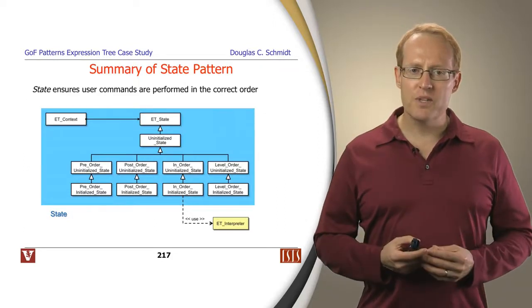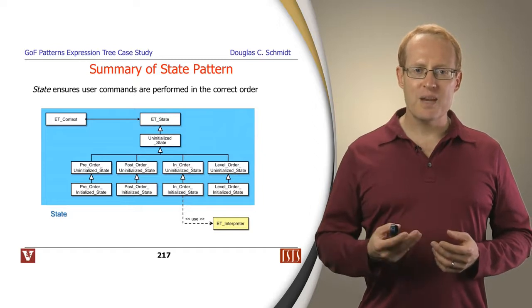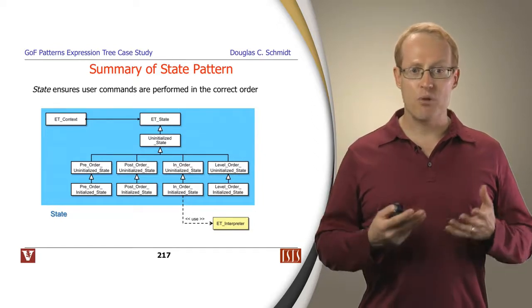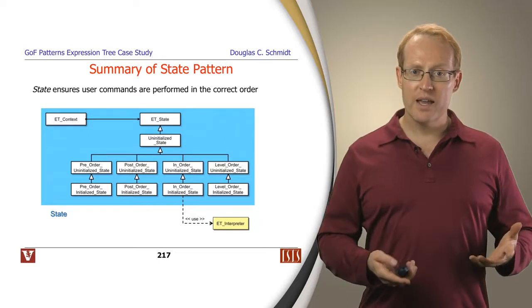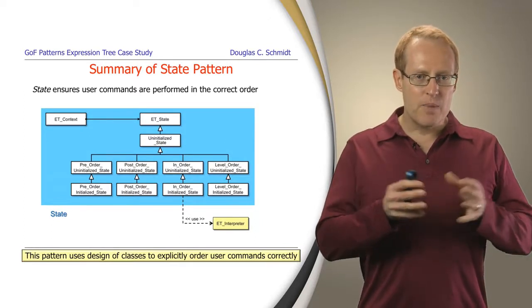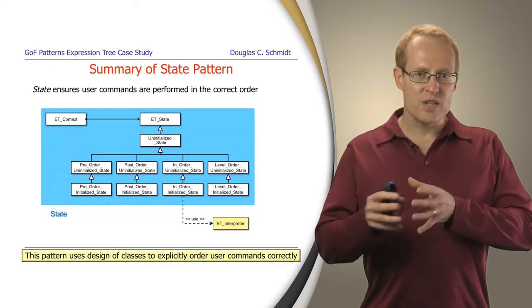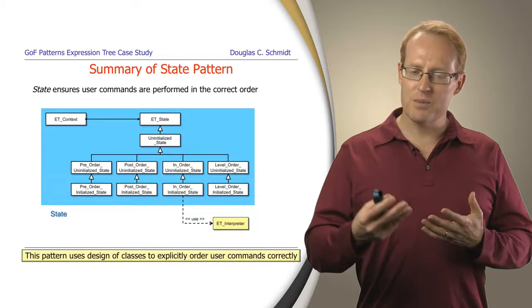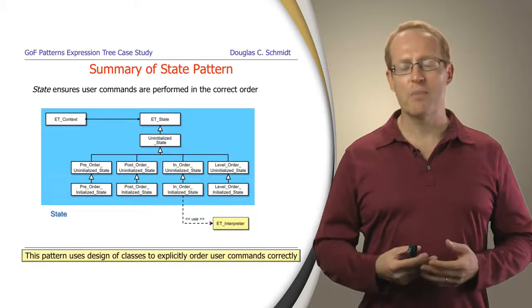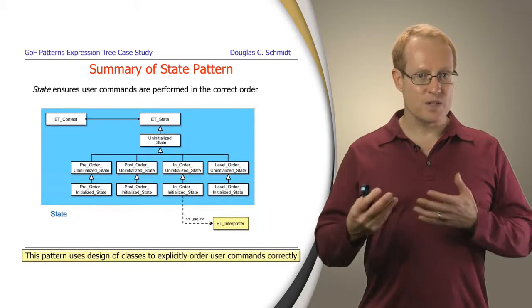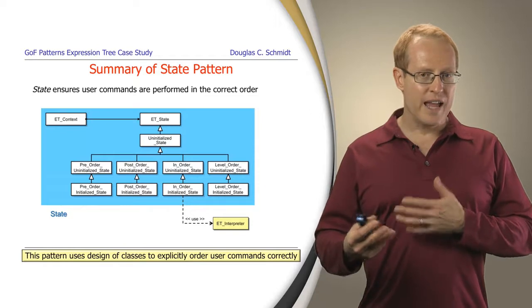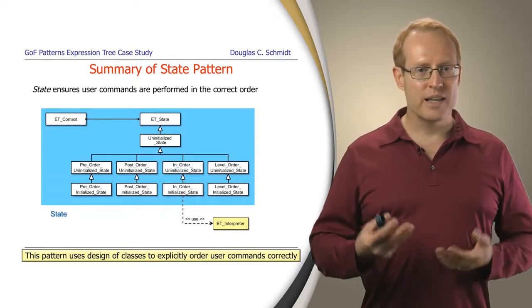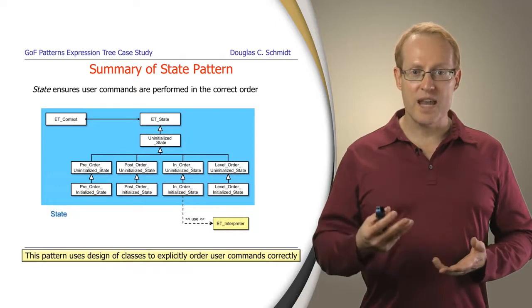So to wrap up this particular discussion, the state pattern gives you a way of being able to ensure user commands are processed in the right order. And it does it by essentially baking in the state transitions into the structure of the software design. And so in some sense, the use of inheritance and the dynamic binding mimics the way in which the state transitions occur. And depending on the complexity of your solution, that can make it easier to write code that can do the right thing based on the state it happens to be in.